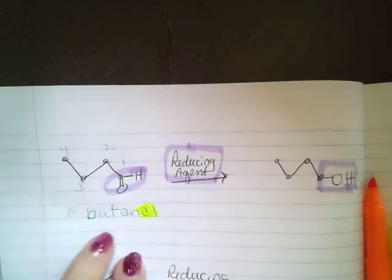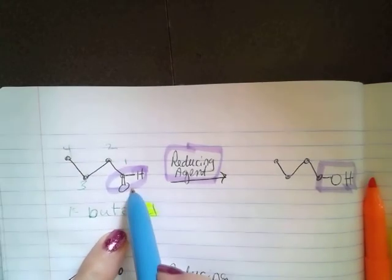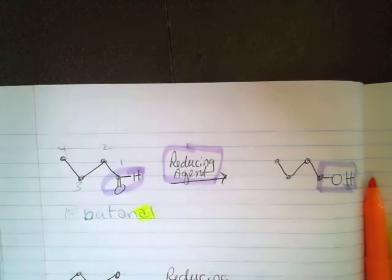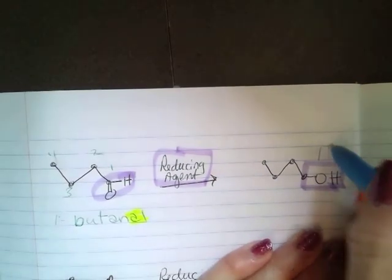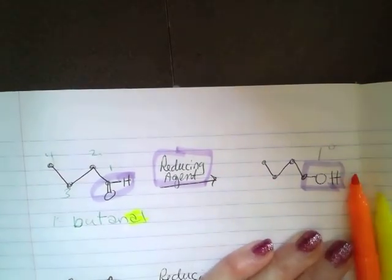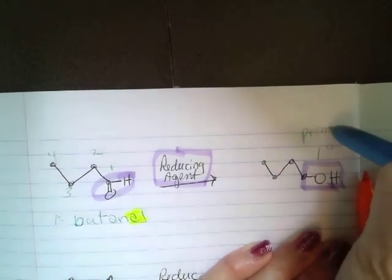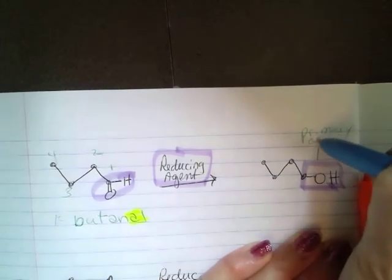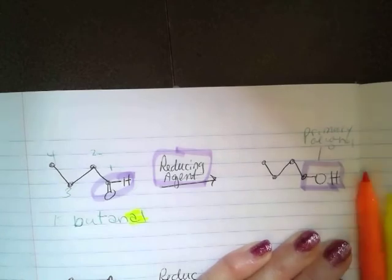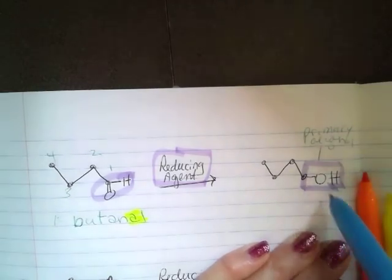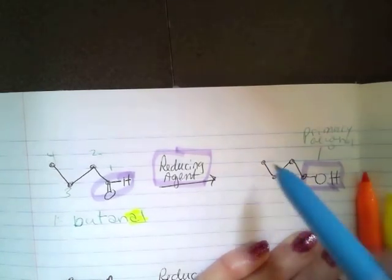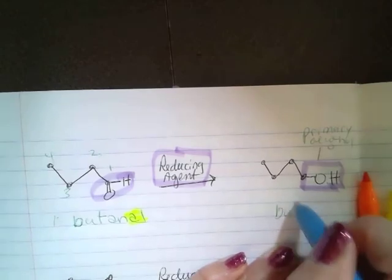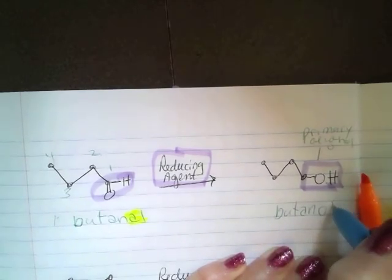Now, a reduction is going to give us a primary alcohol. Okay, so this is a primary alcohol. And the naming of this is going to be one, two, three, four. So parent name is but, B-U-T, butan-ol.